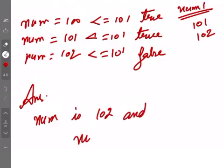Thik hai, so ismein dono ki value hi 102 ho ghi when the loop is over.